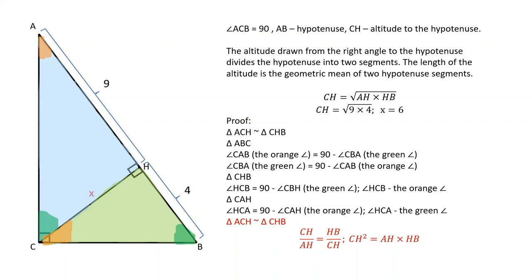Therefore, CH squared is equal to AH times HP. And CH is equal to square root of AH times HP. And that's what we wanted to prove.